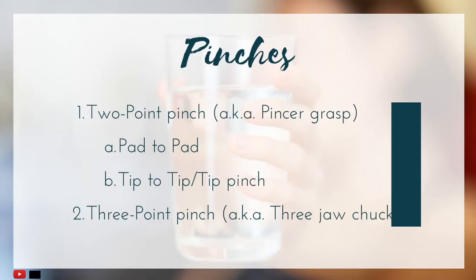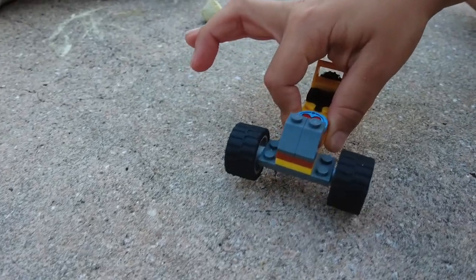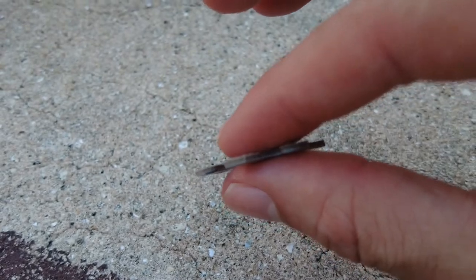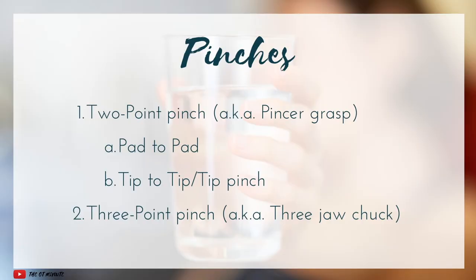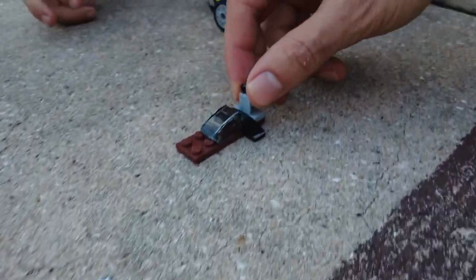Finally, we have our pinches. There is a two-point pinch, also known as a pad-to-pad pinch or pincer grasp. And we have a three-point pinch, also known as a three-jaw chuck grasp. It's also helpful to note that pad-to-pad would be, as the name suggests, the pad of the index finger to the pad of the thumb, versus a tip-to-tip pinch, which is more distinct — the tip of the index finger to the tip of the thumb.